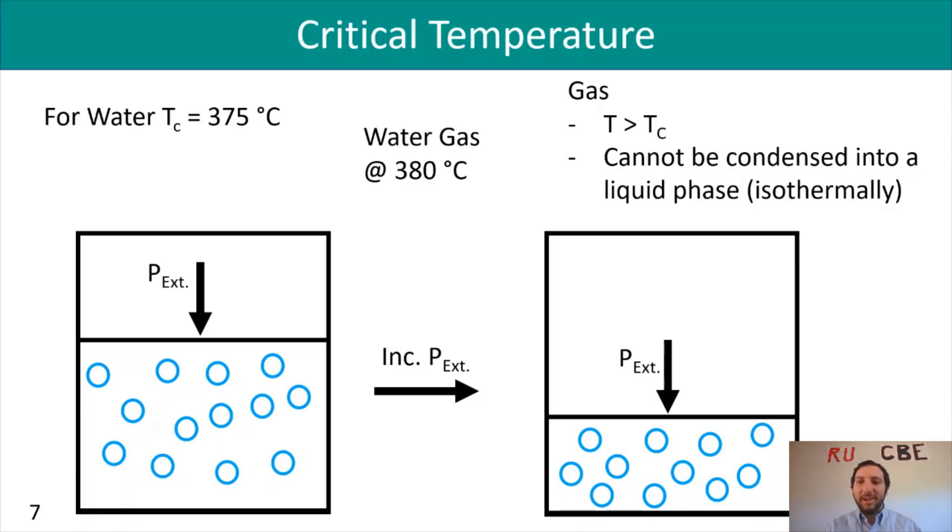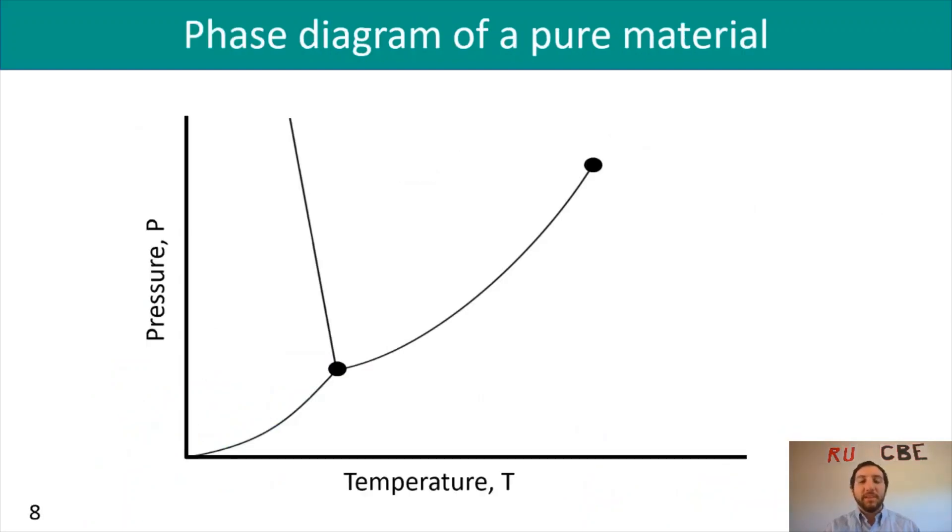With any compound you're dealing with, there's normally a phase diagram that goes along with that pure material. If you're dealing with water, you have a phase diagram. In this phase diagram, we have pressure on the y-axis and temperature on the x-axis. If you have a low temperature and a very high pressure, you're going to have a solid. If you increase that temperature but still have a high amount of pressure, we're going to have a liquid. If I have a low pressure and high temperature, we would have a vapor.